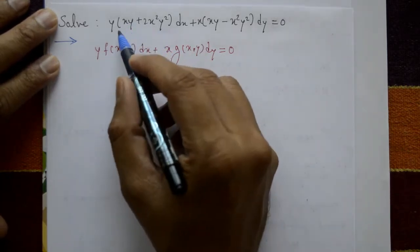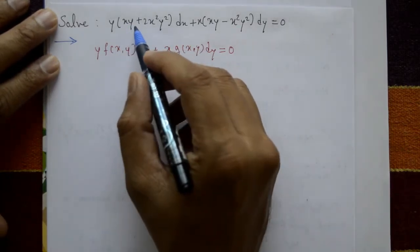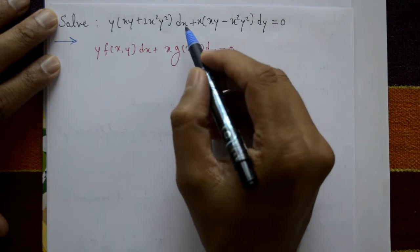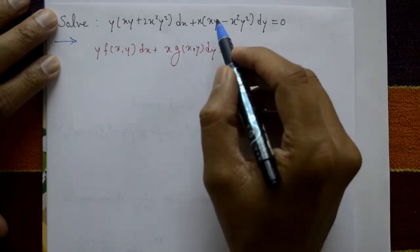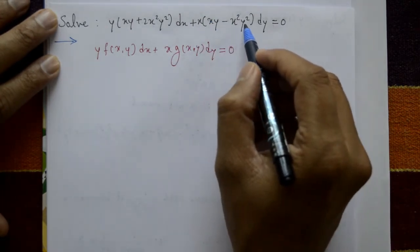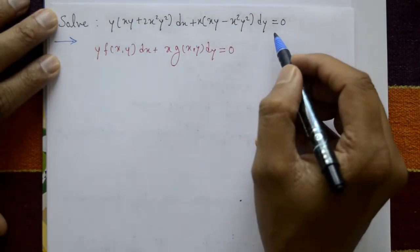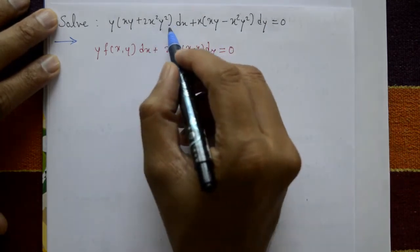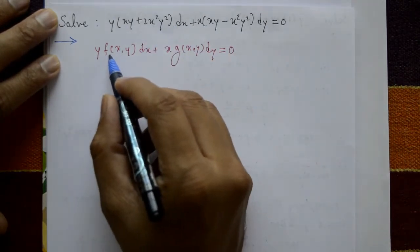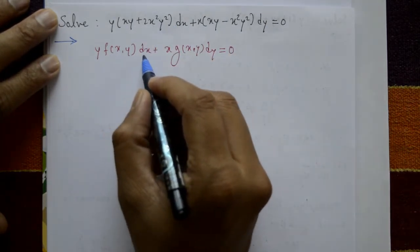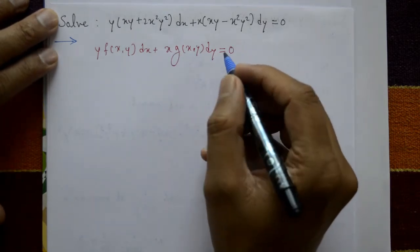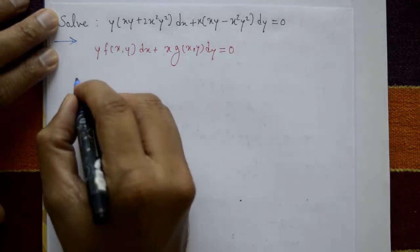Solve y times bracket (xy + 2x²y²) dx plus x times bracket (xy - x²y²) dy equal to 0. The given equation is in the form y·f(xy) dx + x·g(xy) dy = 0.